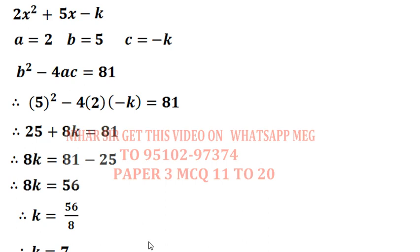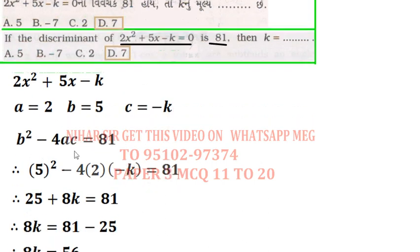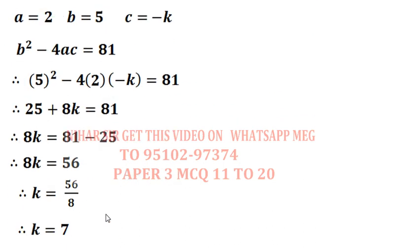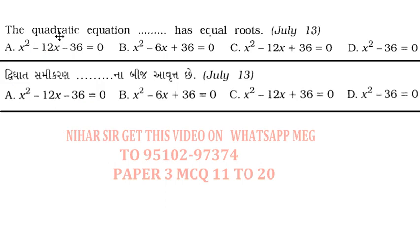So just try it. If you can't do it, look at the board. The answer is 7. If you can do it, just try. If you cannot do it, stop the video, write down the question, then try to solve it. If you cannot solve, then and only then look at your device. The quadratic equation has equal roots. Now I have to check which quadratic equation has equal roots.